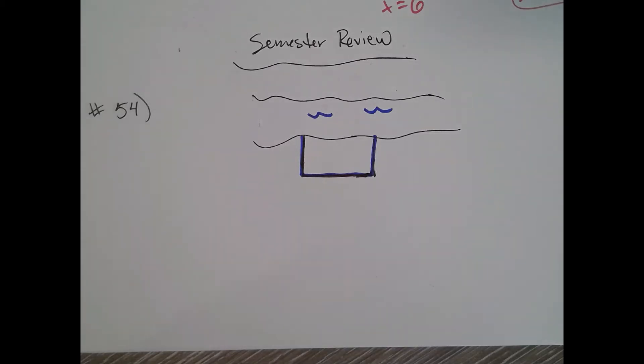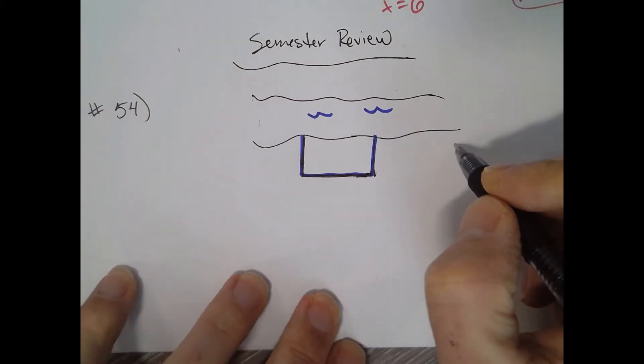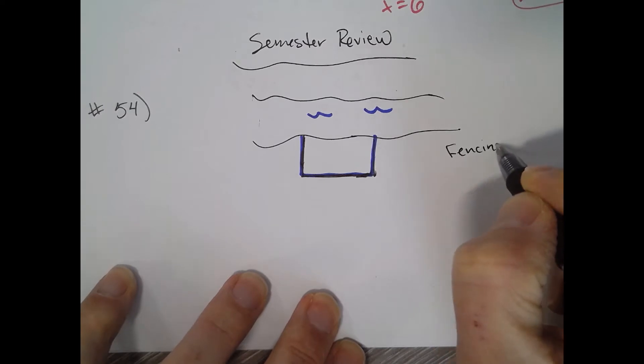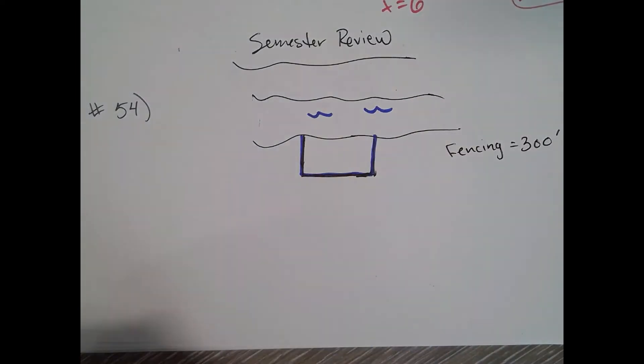Semester review number 54. A rancher has 300 feet of fencing to enclose a pasture bordered on one side by a river. The river side of the pasture needs no fence. Find the dimensions of the pasture that will produce a maximum area.